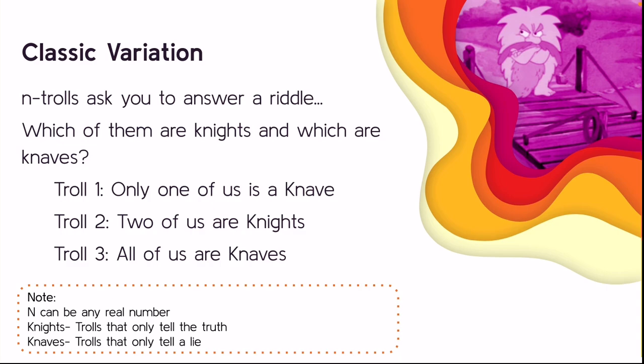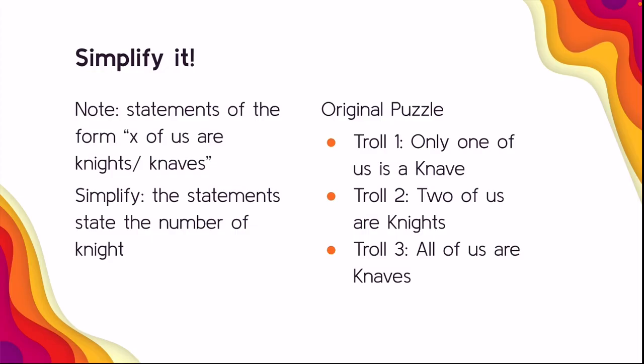This may be a little hard to guess at first glance, so something Dr. Shelton and I realized early on was that we could simplify it. Statements originally made of the form 'x of us are knights' or 'x of us are knaves' can all be simplified to state the number of knaves, because if there are n trolls in the puzzle and two of them are knaves, then n minus two are knights.